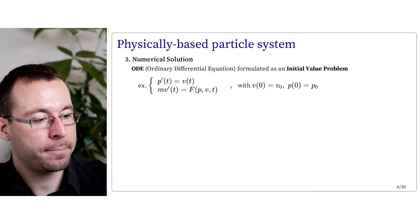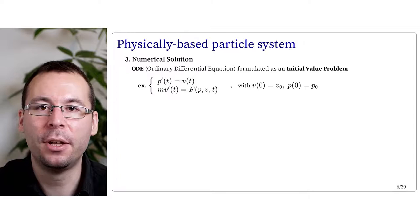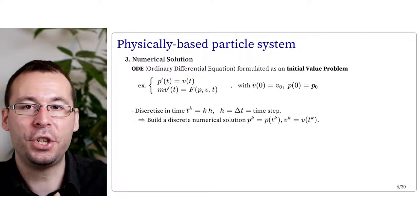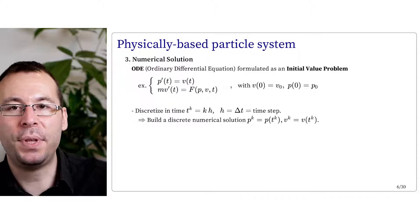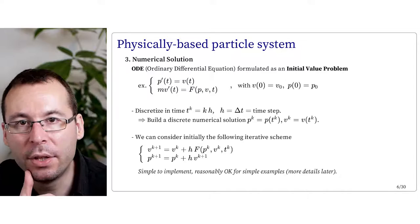Finally, we need to solve the system numerically. In the case of particles we have an ordinary differential equation, often expressed with initial conditions — meaning that we know v at time 0 and p at time 0. The general idea is that we discretize the time in discrete steps delta t or h, and we build a discrete numerical solution: pk equals p at time tk, or p at time k times delta t. There are actually several numerical schemes that can be used to solve such equations.